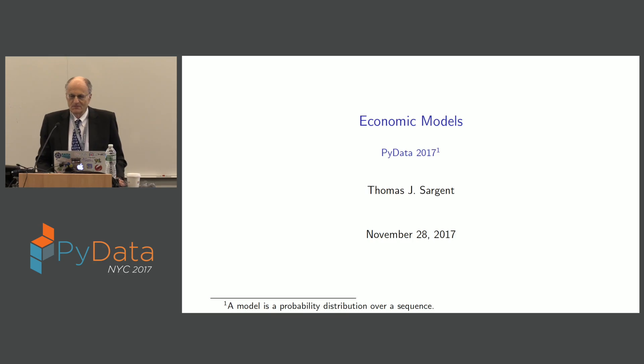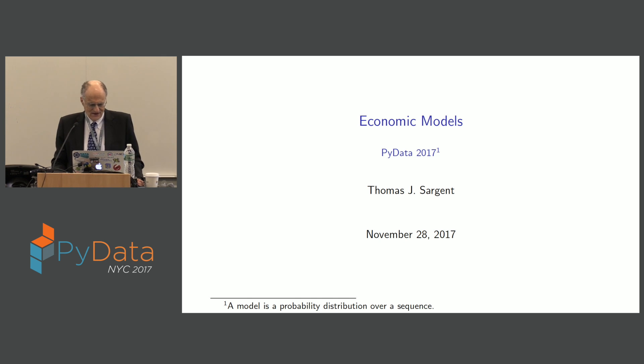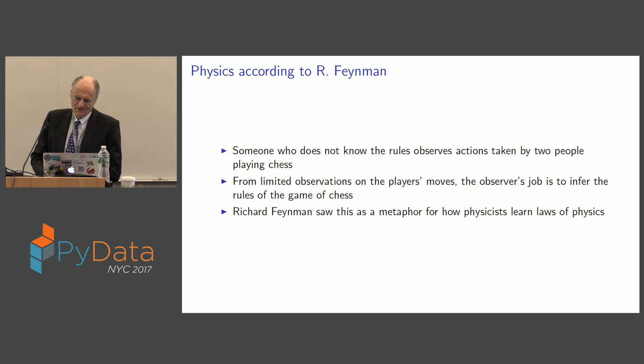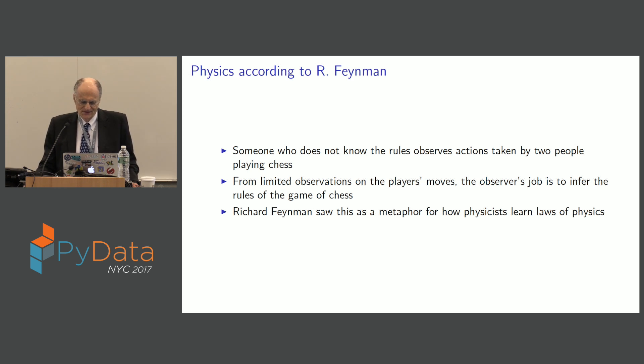So I'm going to talk about economic models. For me, a model is going to be the same thing it is for Andrew Gelman. It's a probability distribution over a sequence. Here's physics according to the great physicist Richard Feynman. Think about someone who does not know the rules but observes actions taken by two people who are playing chess. They see some of the actions and from these limited observations on the players' moves, the observer's job is to infer the rules of the game of chess.